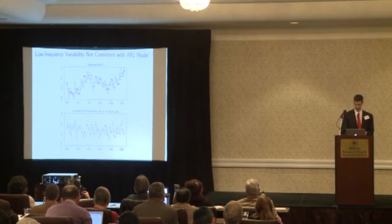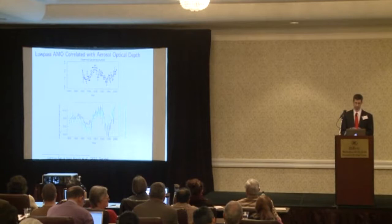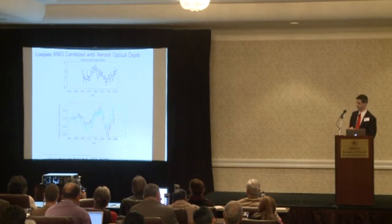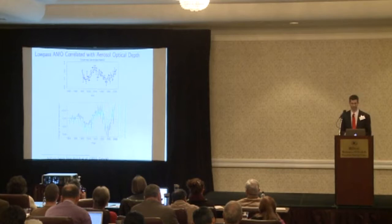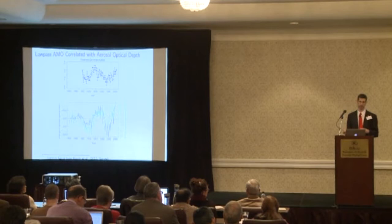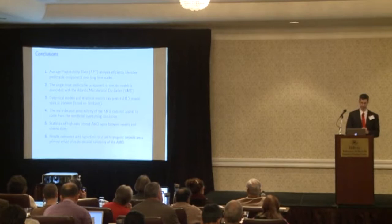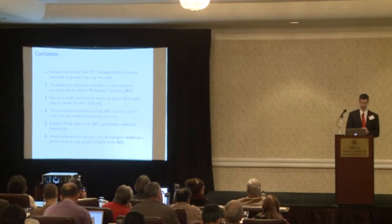There is a proposal in the literature by Booth et al. that the multidecadal variation is coming from anthropogenic aerosols. The bottom figure shows the change in aerosol optical depth over the Atlantic, which has multidecadal variation matching the observed multidecadal variation in the top figure. There is a consistency: if you assume the multidecadal variability is coming from aerosols and subtract that out, you get residuals that match the model's internal variability in most cases — though not all, and we're still investigating those exceptions. Thank you.